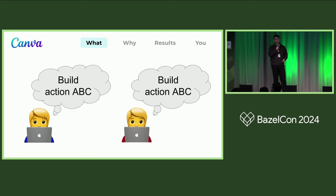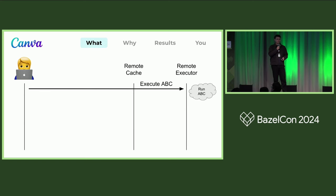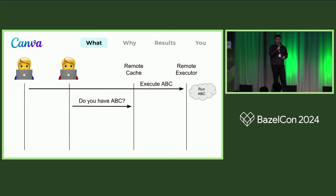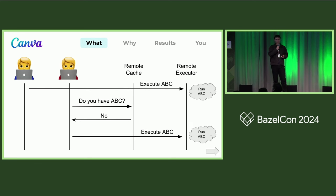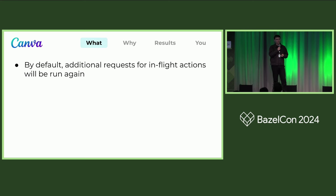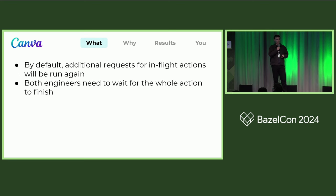Let's compare that with what happens when two users try to run the same action at the same time. The action is already executing for the first user, then the second user sends a request to the cache for the same action, but since this action is still in progress on the remote executor, there isn't a result yet — so it's a cache miss. They send an identical execute request and we run the action a second time. By default, both engineers need to wait for the full duration of the action execution, and you spend twice as much money on compute.